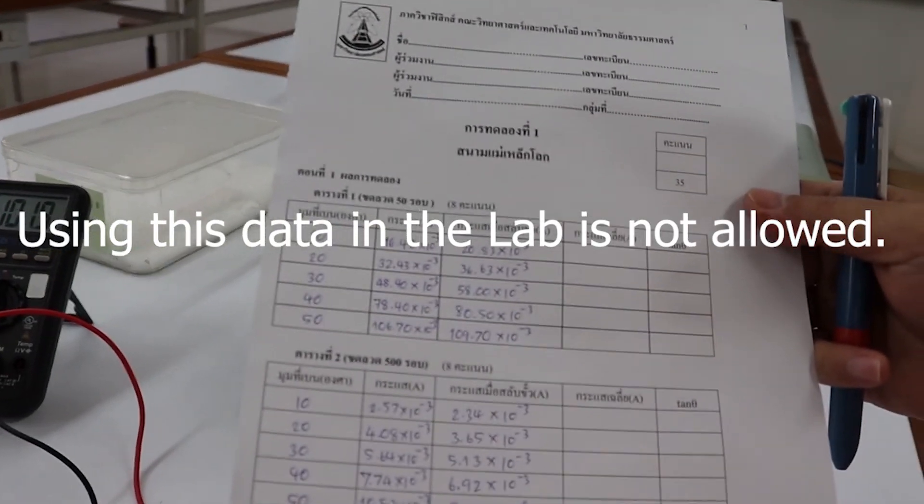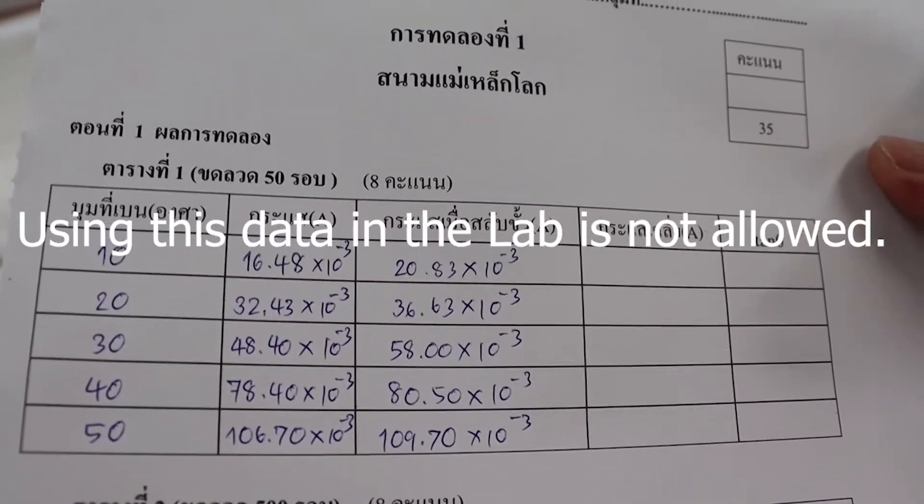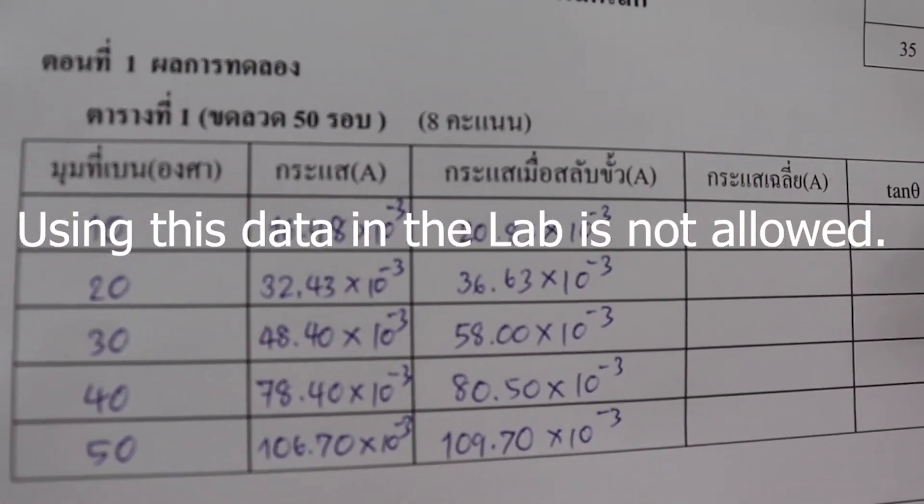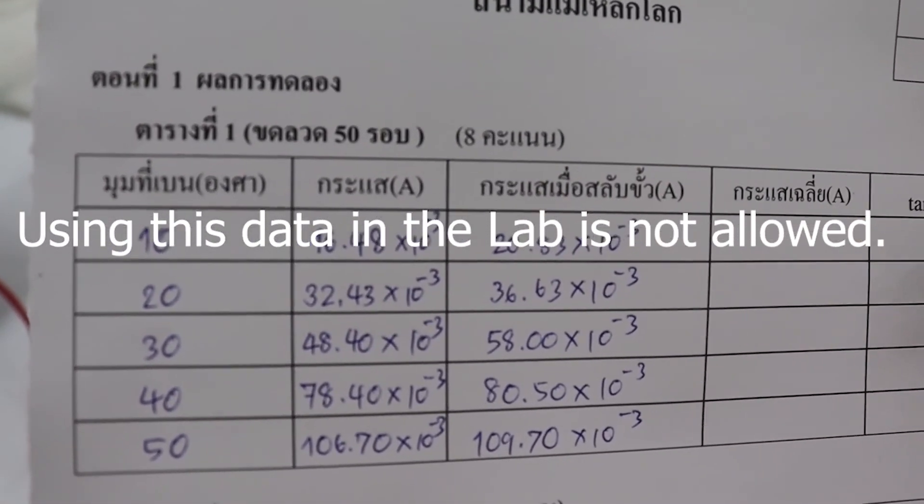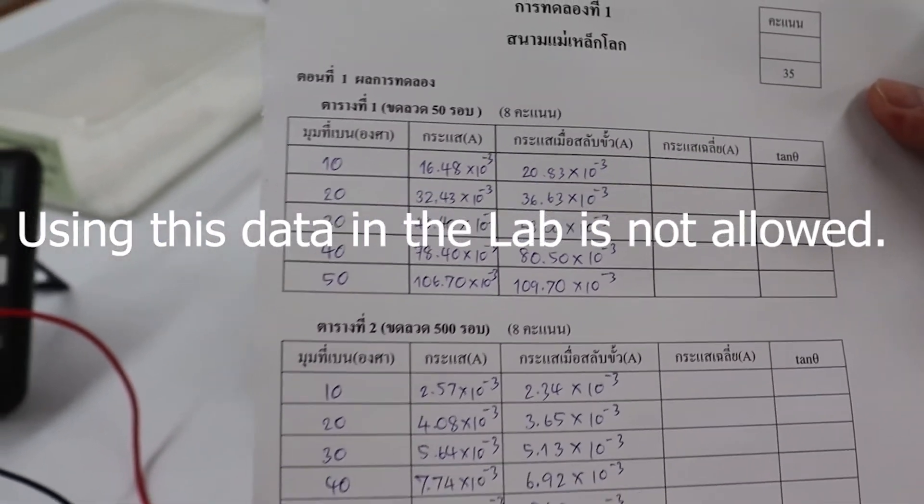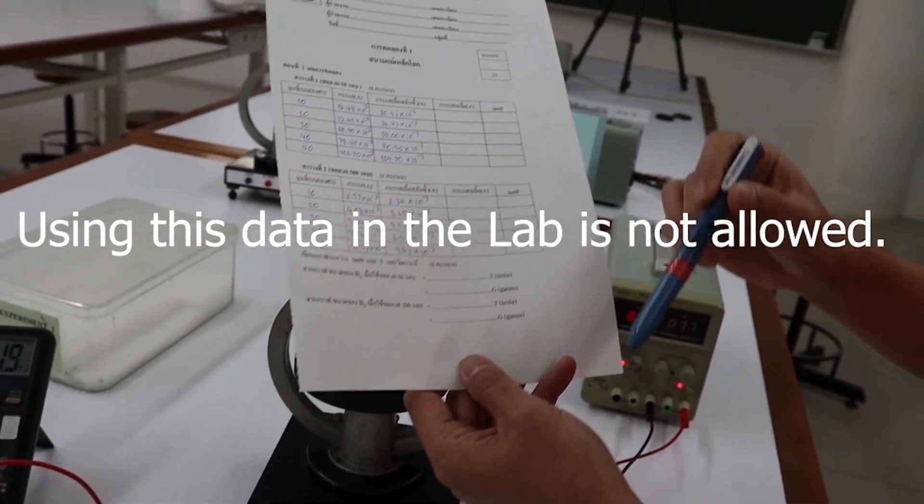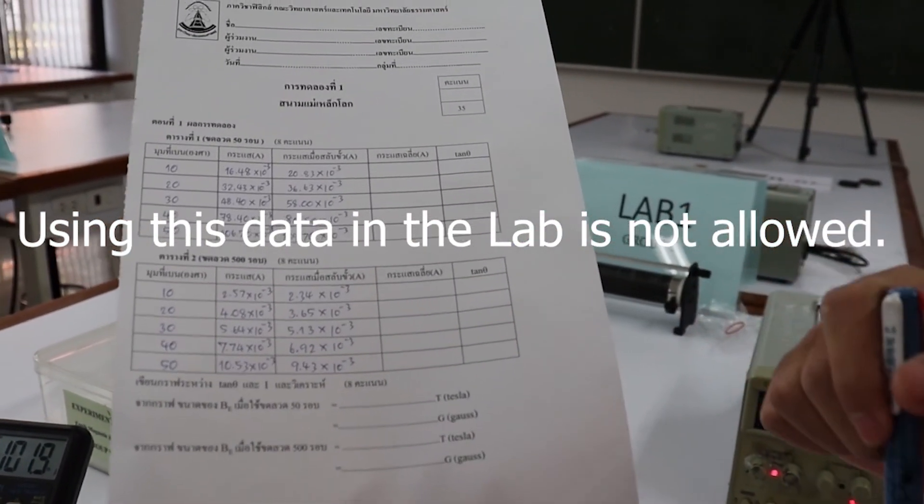The results of this experiment show the current data as the experiment table. Students use this information to calculate the mean of current and tan theta. Take the calculated data to plot a linear graph of the two parts. To calculate the Earth's magnetic field from the slope of the graph obtained.